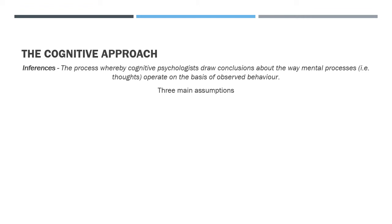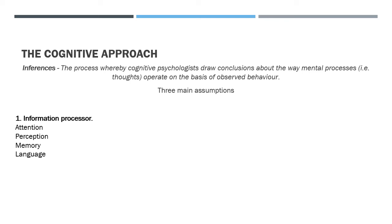The cognitive approach uses inferences — cognitive psychologists draw conclusions about mental processes based on observed behaviour, because things like thoughts cannot be seen even in a brain scan. There are three main assumptions. The first is that we are like an information processor: we pay attention to the world, perceive qualities of items, search our memory, and apply language. For example, perceiving an object with four legs, a cushion and a tall back, searching memory and applying the word 'chair'.